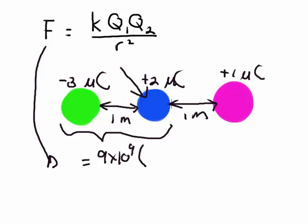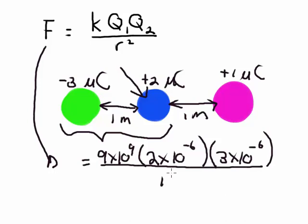Q1 is now going to be this plus 2 micro coulomb. I'm going to leave out the plus sign and it will be 2 times 10 to the power negative 6, which I will multiply with 3 times 10 to the power negative 6 above the line. I'm going to divide this by 1 squared. When you calculate this it should give you 0.054 Newton.